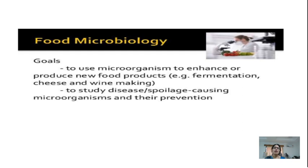The second goal of food microbiology is to study disease or spoilage-causing microorganisms and their prevention. Because if organisms are present in the food, the food will definitely get spoiled. If we are aware of food microbiology, we can prevent those diseases by preventing microorganisms in the food.